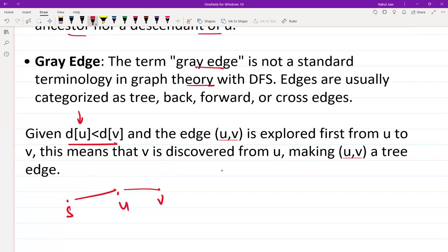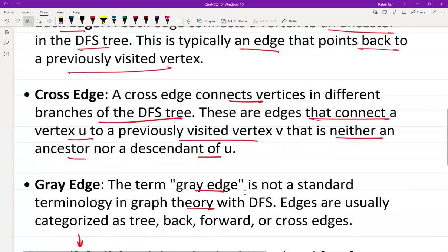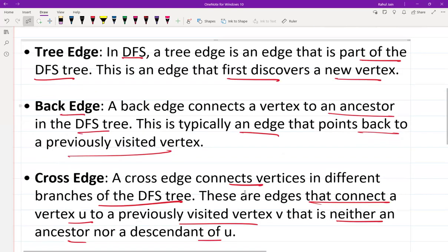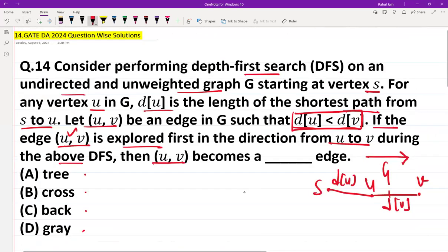in this direction. This means that V is discovered from U, obviously, because if we are going in this direction, V is discovered because of U. This makes (U, V) a tree edge, and it would be a tree edge because we are discovering V from U. So it is a tree edge, not a back edge, not a cross edge. Option A is the correct answer.